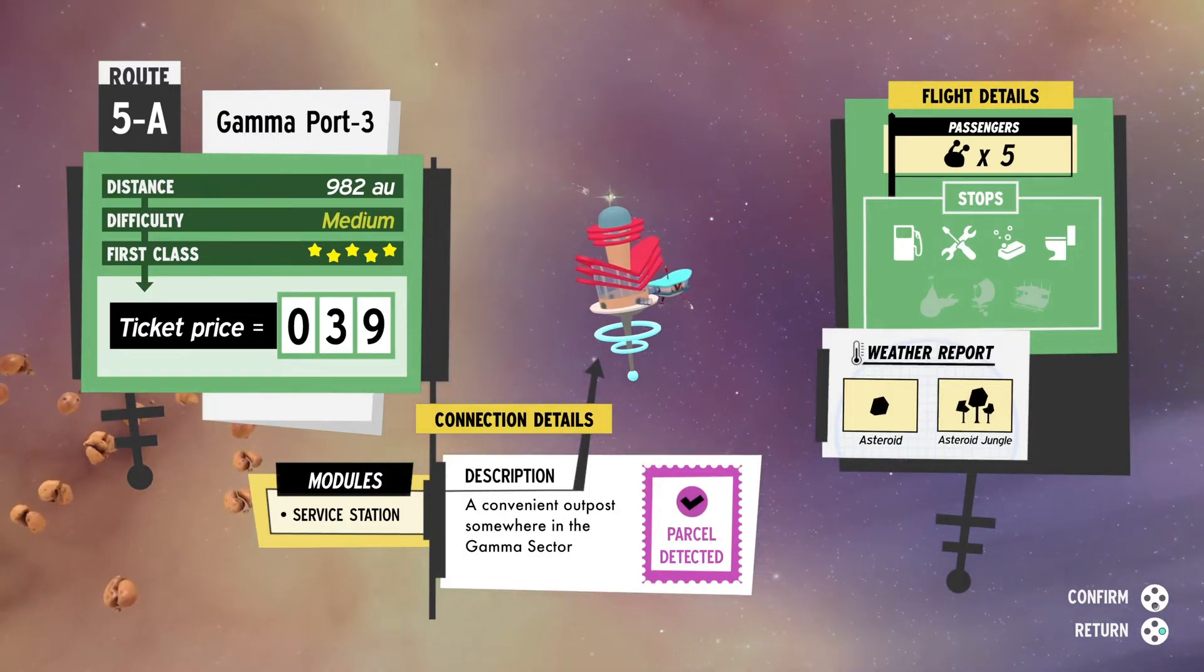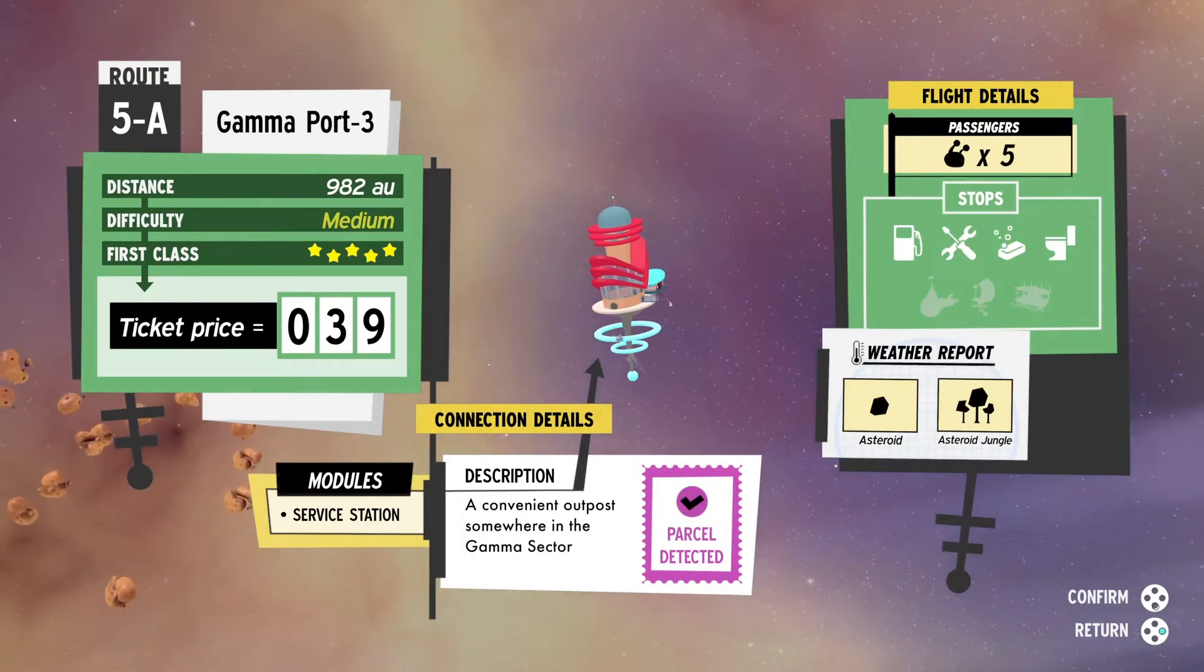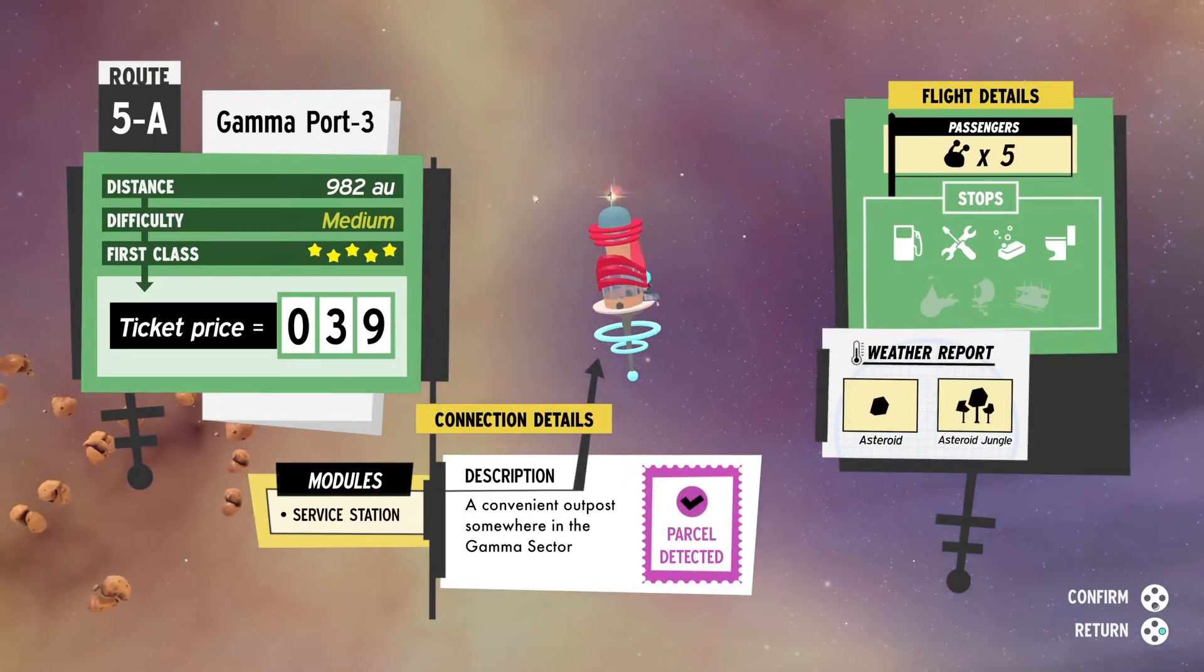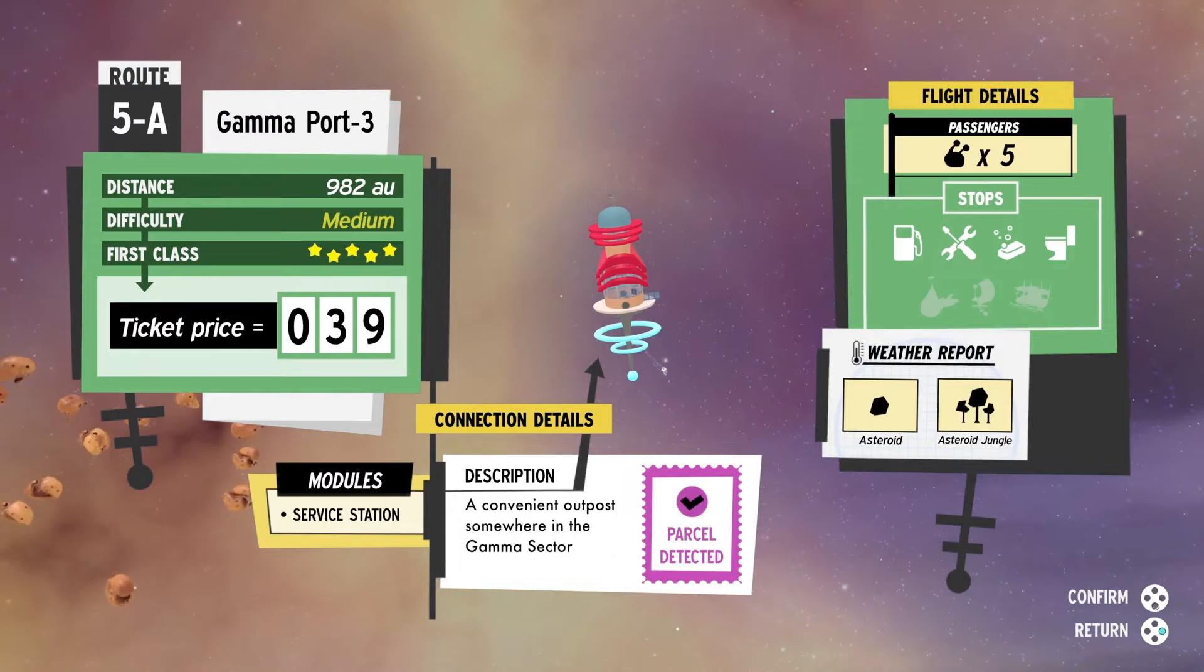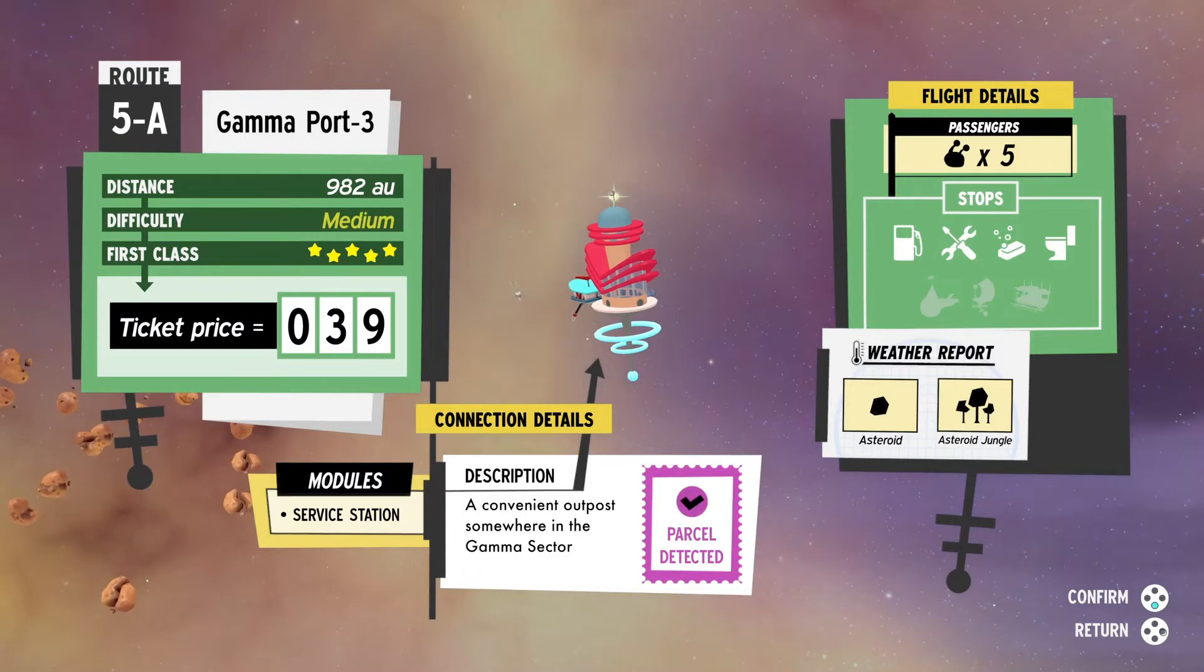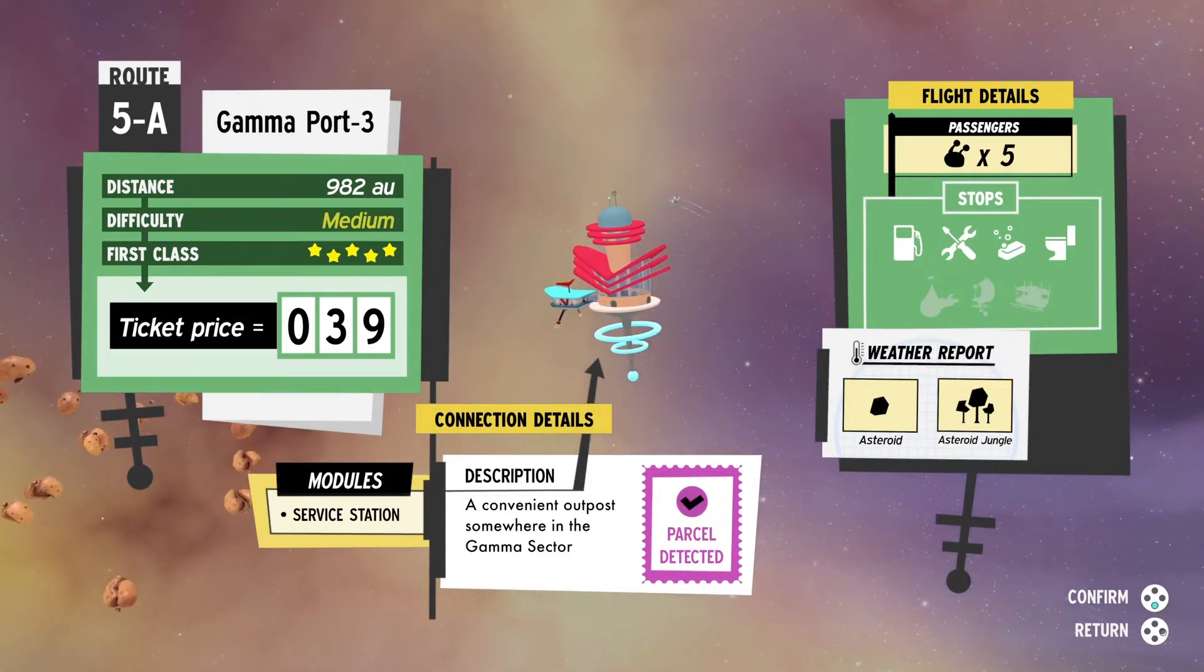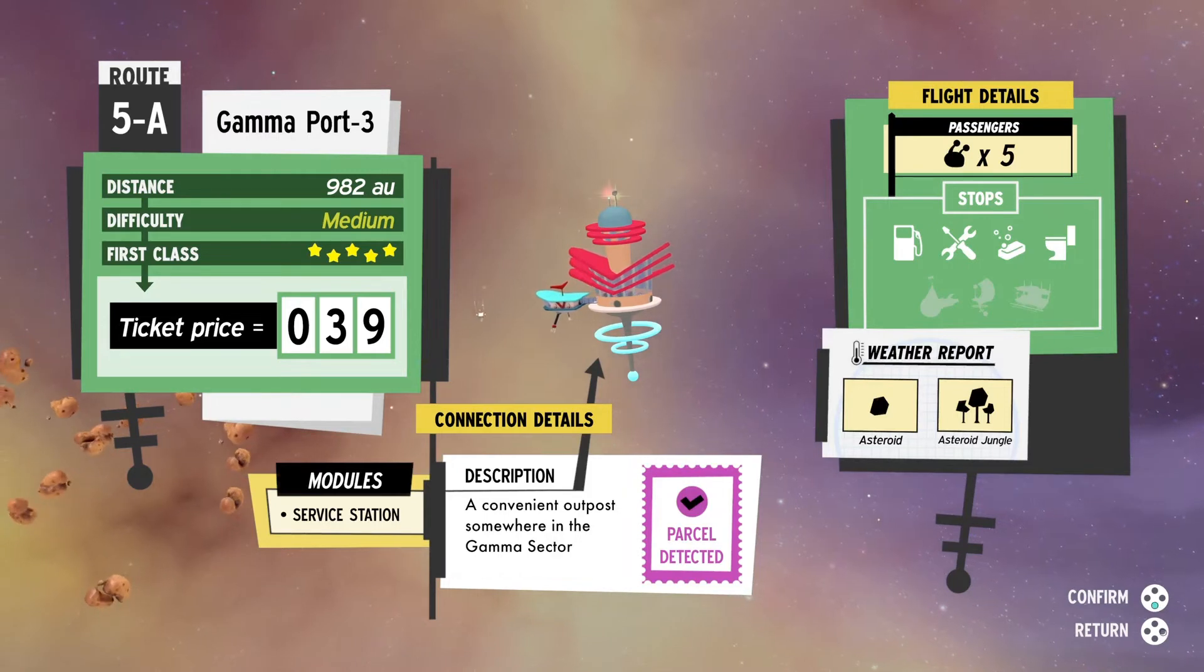Obviously, the top row seems pretty self-explanatory with fuel station, repair shop, cleaning station, and bathroom, but I was trying to figure out what the meaning of the three underneath were, and basically, those are stops where you can pick up passengers along the way.